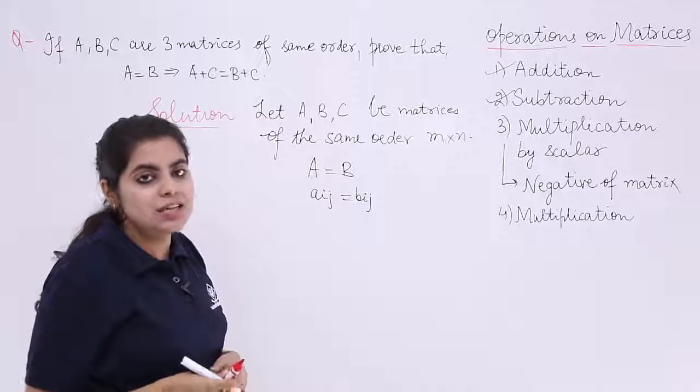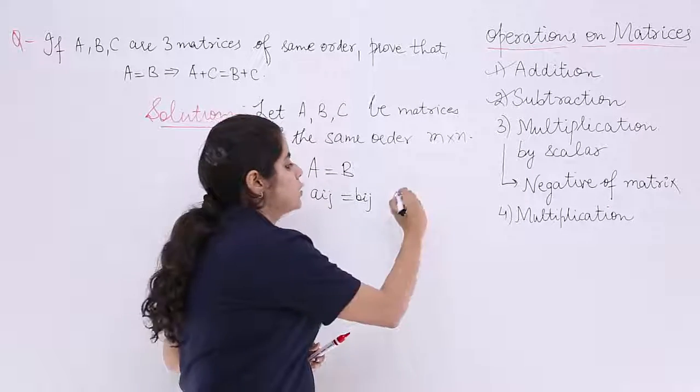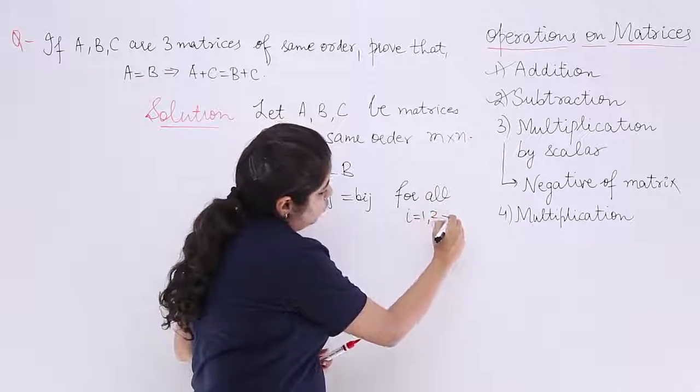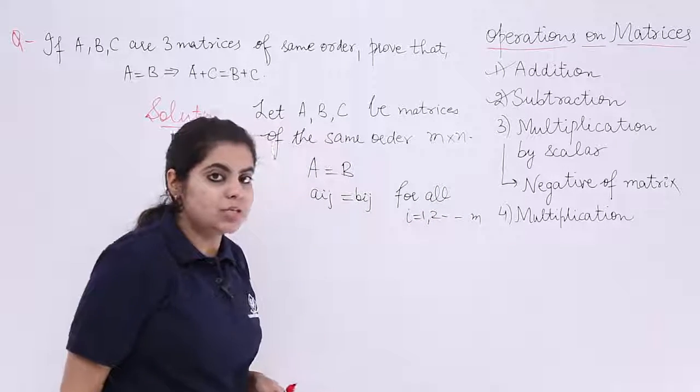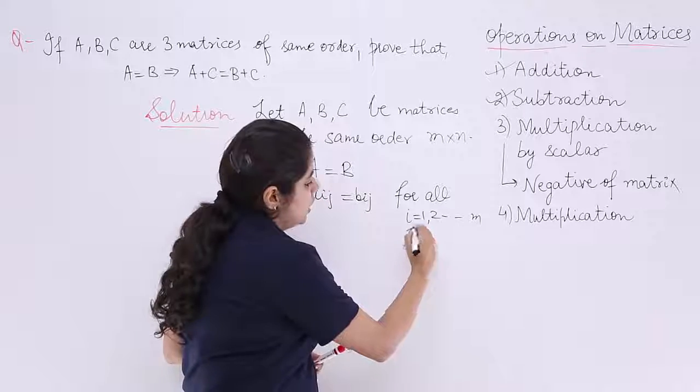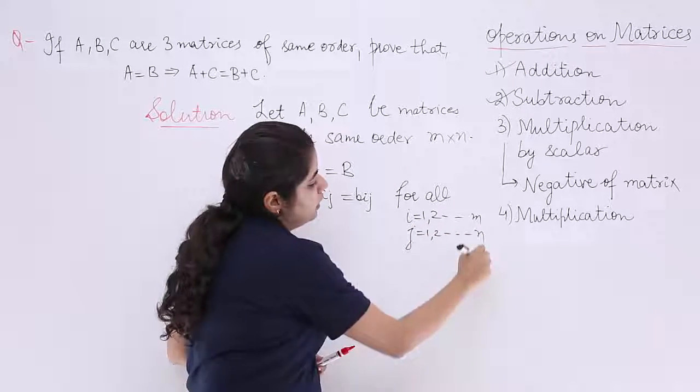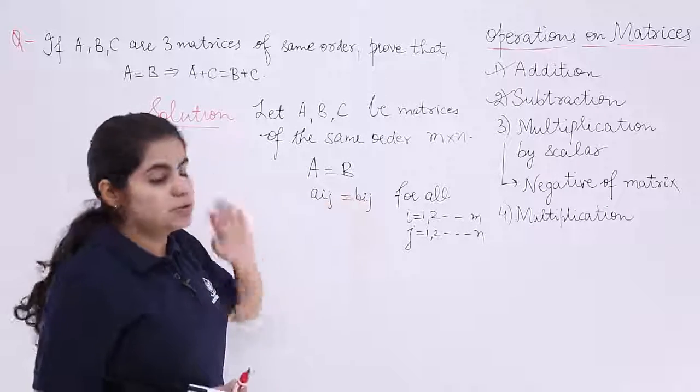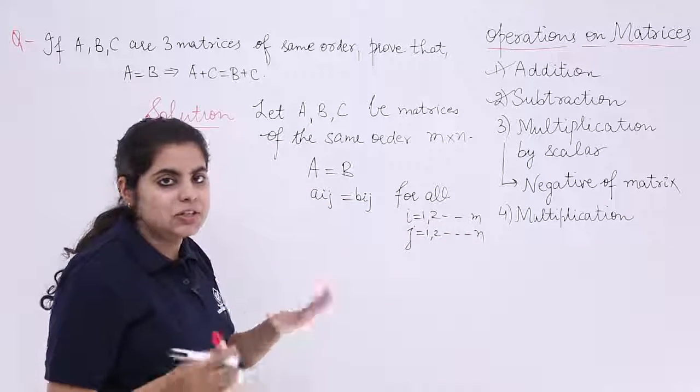I take matrix B as B_ij, C as C_ij and here this all is true for all i equal to 1, 2 till M because there are M rows and j is equal to 1, 2 till N because there are N columns. Now A_ij is equal to B_ij for all i and j values taken up.